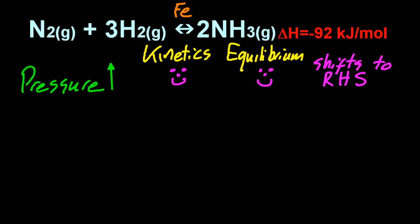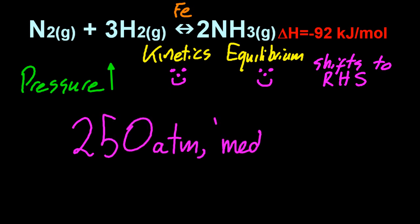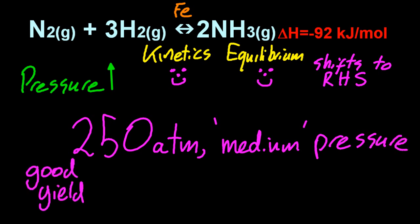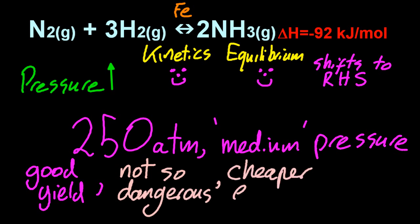So they chose 250 atmospheres as the optimum. Now, that is a medium pressure. They can make much higher pressure if they wanted, but you know what? They've got a good yield for that, and it's not too dangerous. You didn't have to spend a lot of money on high-quality reaction vessels that wouldn't explode with these super-duper high pressures. A medium pressure, that was fine. So economics play a role in that.